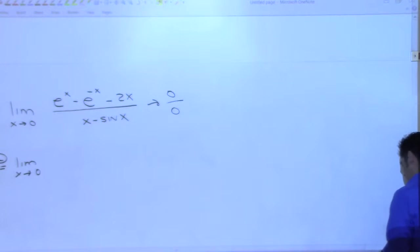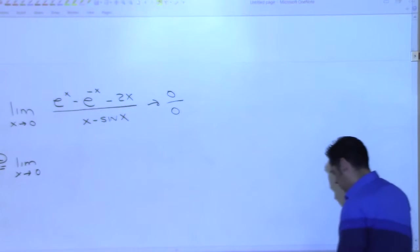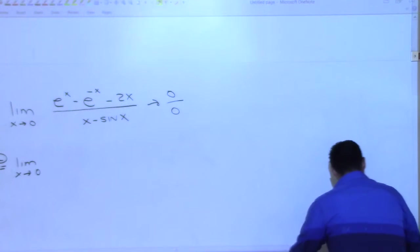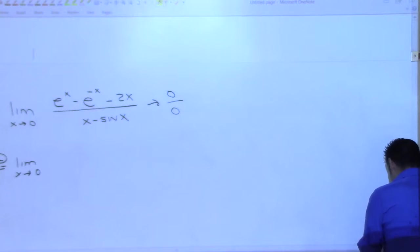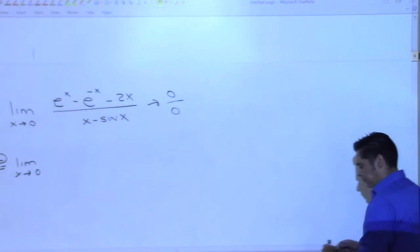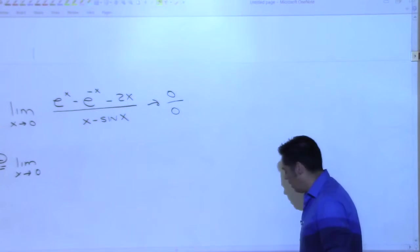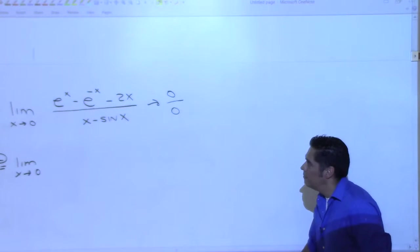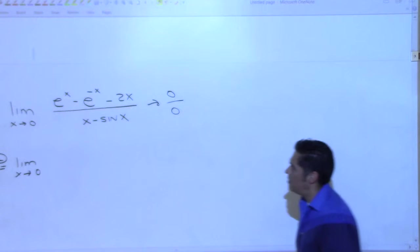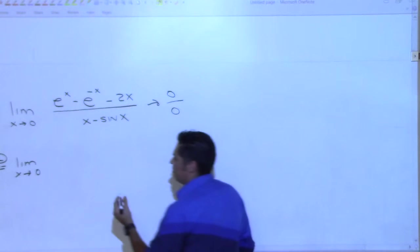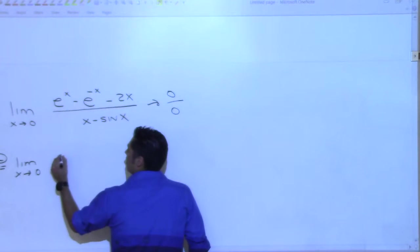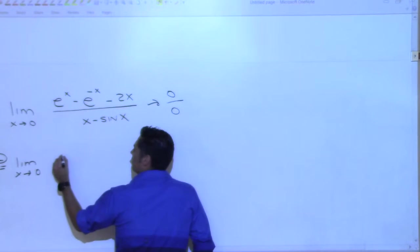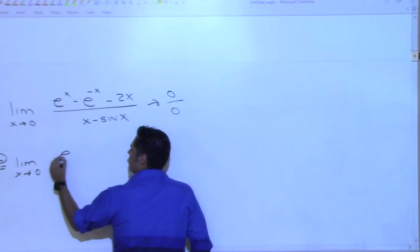I didn't call on many people last time. Nas, you're up. Derivative of the top is — Nas, derivative of the top. It's e to the x.